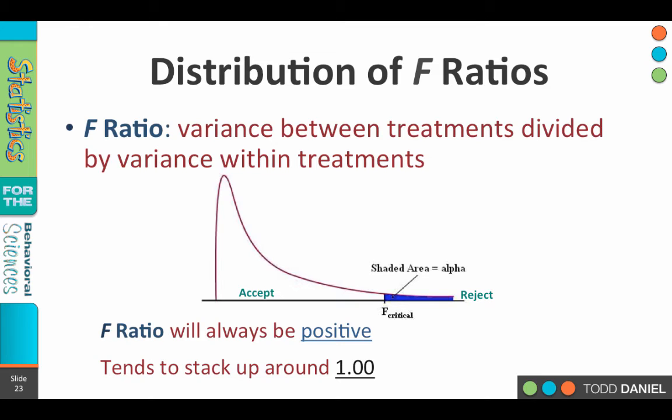The F-ratio will always be positive — we will never have an F-ratio less than zero; if we do, we've made a mistake and need to go back and find it. The numbers are going to tend to stack up around one. If the null hypothesis is correct and there's no difference between the groups, the between-subjects factor zeros out, and dividing variance within by itself works out to around one. The further the F-ratio is from one, the more likely it represents significant differences. We can set a critical value found in the F-table, and if we get an F-ratio beyond that critical value — in the shaded area of alpha equals 0.05 — then we know there is a statistically significant difference among at least two of the groups, and we would reject the null hypothesis.